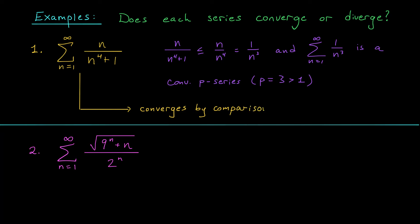Let's now move on to example two. Again, we have a pretty ugly looking series. It's definitely not geometric, it's definitely not a p-series, and it's not something I want to integrate. So we'll try the comparison test. I'm going to look for the dominating term in the numerator and the dominating term in the denominator. In this case, the dominating term in the denominator is definitely two to the n. In the numerator, the dominating term is going to be the exponential function — that grows a lot more quickly than n. So I'm going to try to throw out the n term.